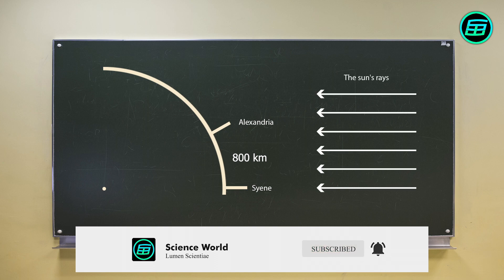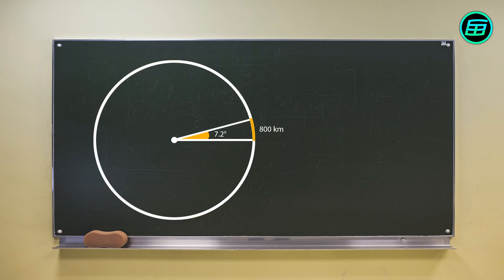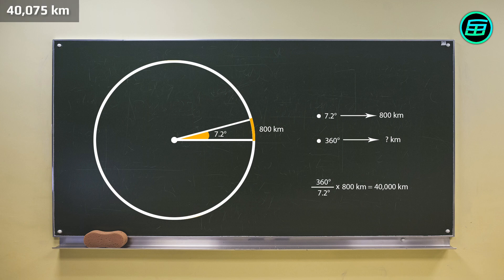After that, Eratosthenes made a simple calculation: if 7.2 degrees is equivalent to 800 kilometers, then 360 degrees is equivalent to what? The result was 40,000 kilometers. Today we know the Earth's circumference to be 40,075 kilometers, or 24,901 miles — a difference of just 0.2%.